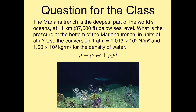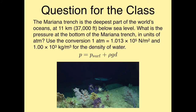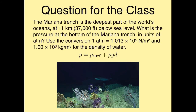Let's use this result for an example. The Mariana Trench is the deepest part of the world's oceans — 11 kilometers below sea level, or about 37,000 feet. What is the pressure at the bottom of the Mariana Trench in atmospheres? We'll need: 1 atm = 1.013 × 10⁵ Pa and the density of water = 1.00 × 10³ kg/m³.